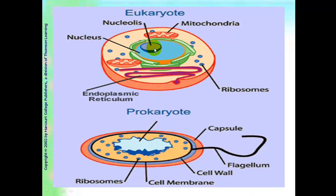In general, here is your eukaryote. You can see the nucleus — that's the key component of a eukaryote — and eukaryotes have all of these organelles. A prokaryote does not have any of these organelles, like mitochondria, ER, or nucleus. They have a nuclear region, but there is no nucleus. Ribosomes are present, cell wall, cell membrane, but no organelles.